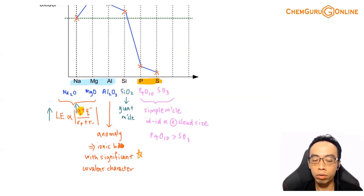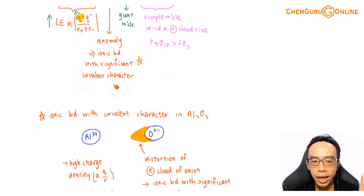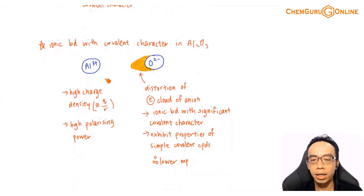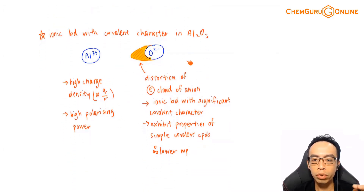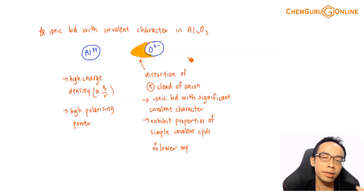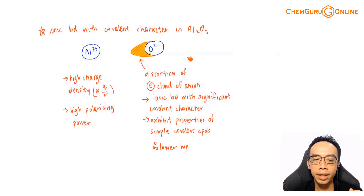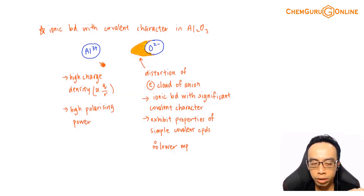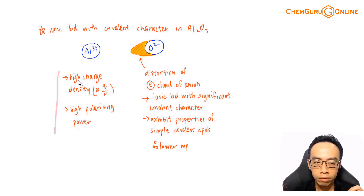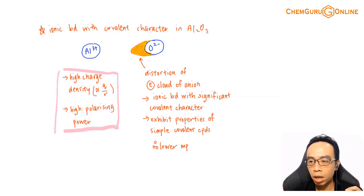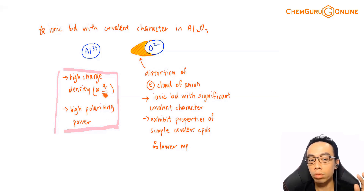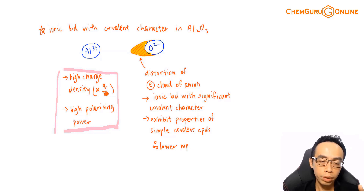Now, ionic bond with covalent character — we get to apply this here. In Al₂O₃, we use it to explain why the melting point is lower than magnesium oxide. It's because of the charge density of the metal cation. We need a very good understanding of charge density and polarizing power — we will apply this quite extensively in periodicity and the next topic.